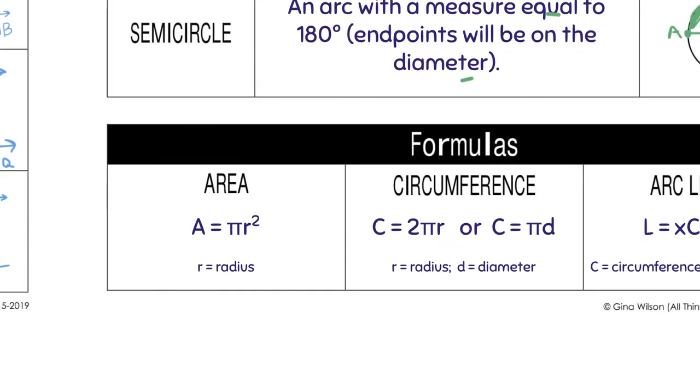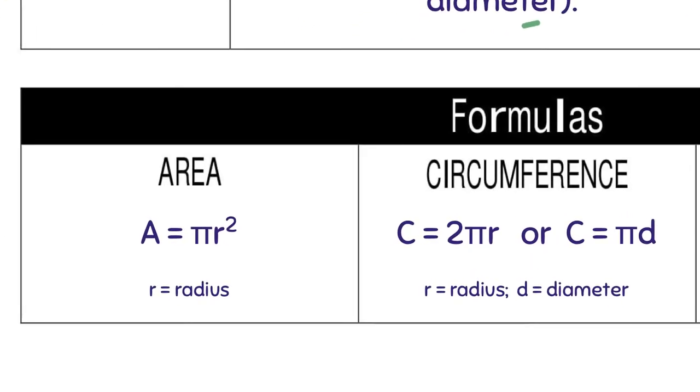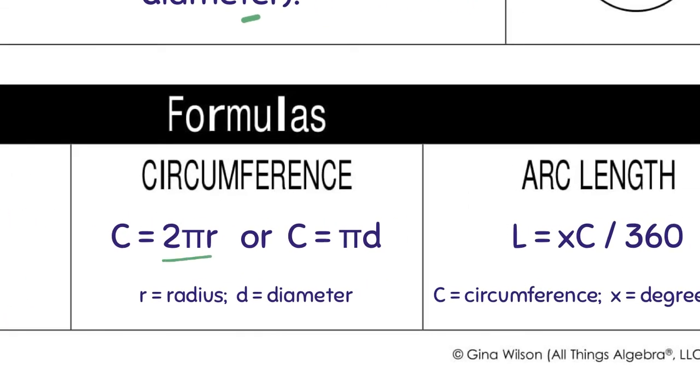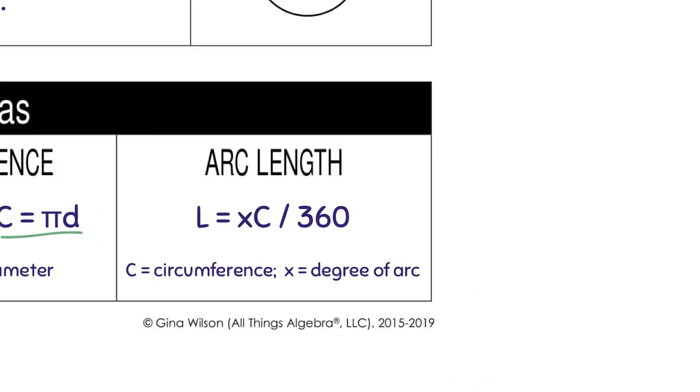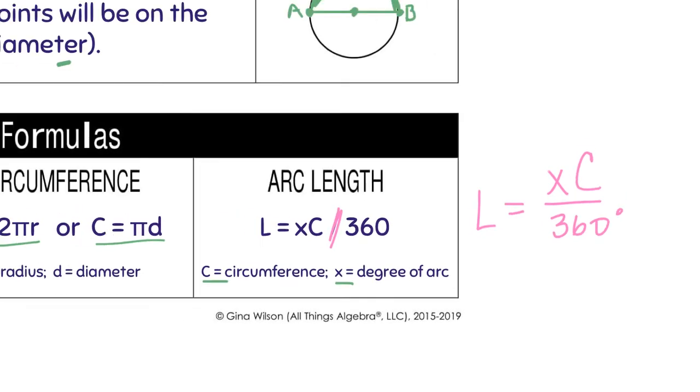Then some formulas that you guys should be familiar with. Area is pi r to the second power, where r is radius. Circumference is 2 pi r. r is radius. Or you can think of it as pi times diameter. Arc length. This is the only one that's brand new. And it's, if x was the degree of an arc, and we know that c is circumference, arc length would equal the degree of the arc times the circumference divided by 360, since that's the measure of a circle. Here I just have it sideways, but it should look like this.